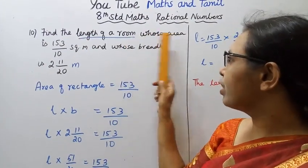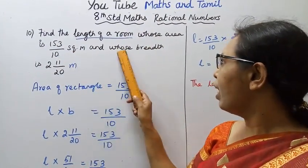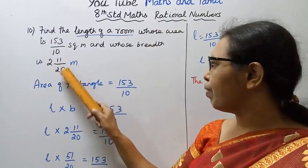Find the length of a room whose area is 153 by 10 square meter and whose breadth is 2 11 by 20 meter.